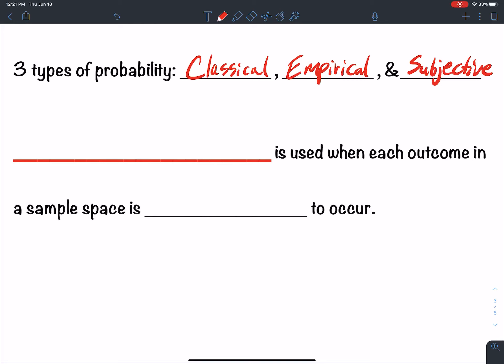Three types of probability: classical, empirical, and subjective.